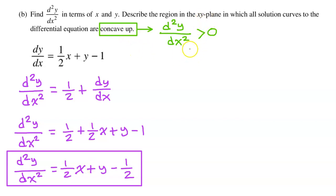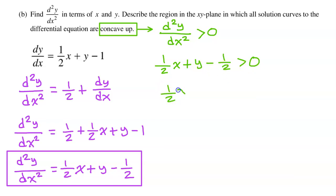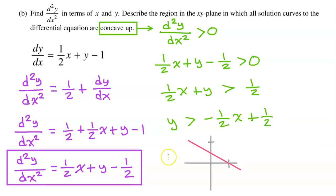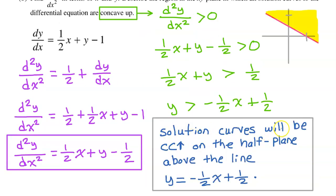For the second half of the question, the original function will be concave up where the second derivative is positive. Setting the second derivative greater than zero and solving for y: adding one-half to both sides gives one-half x plus y greater than one-half, then subtracting one-half x gives y greater than negative one-half x plus one-half. Solution curves will be concave up on the half plane above the line y equals negative one-half x plus one-half.